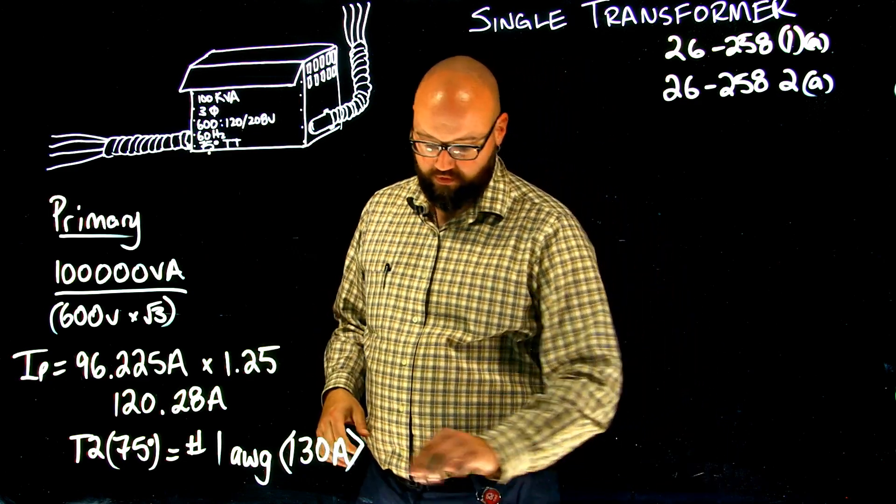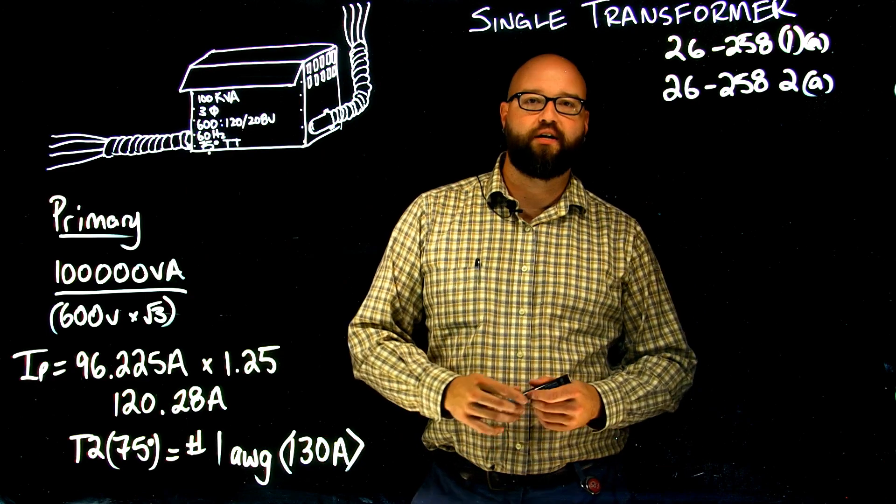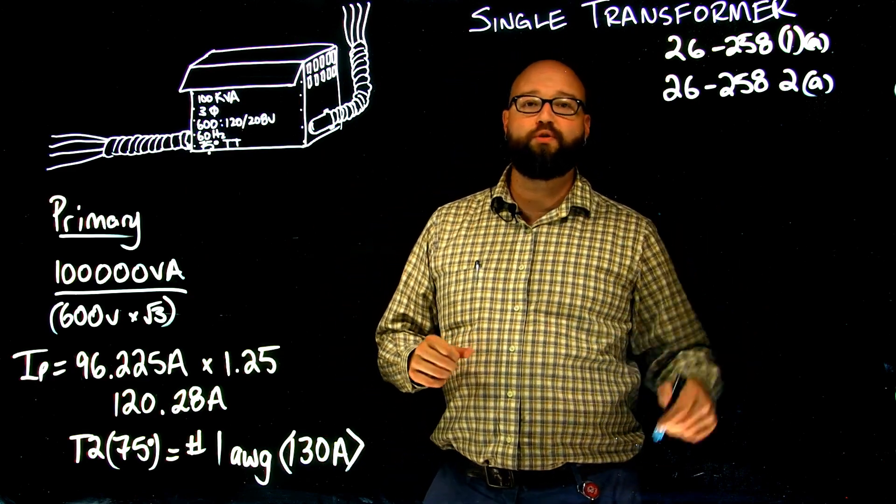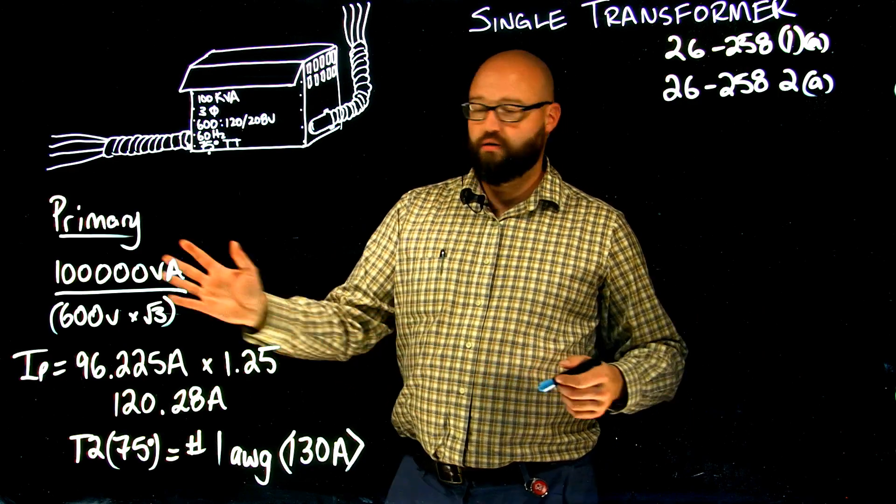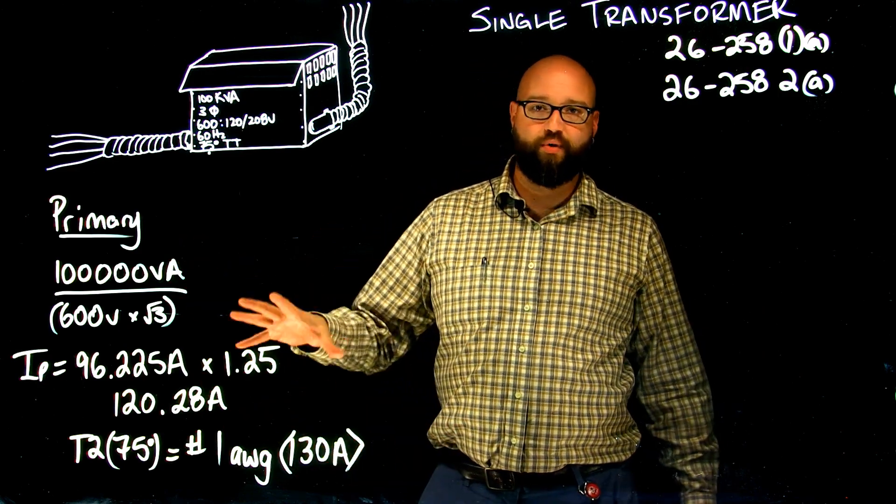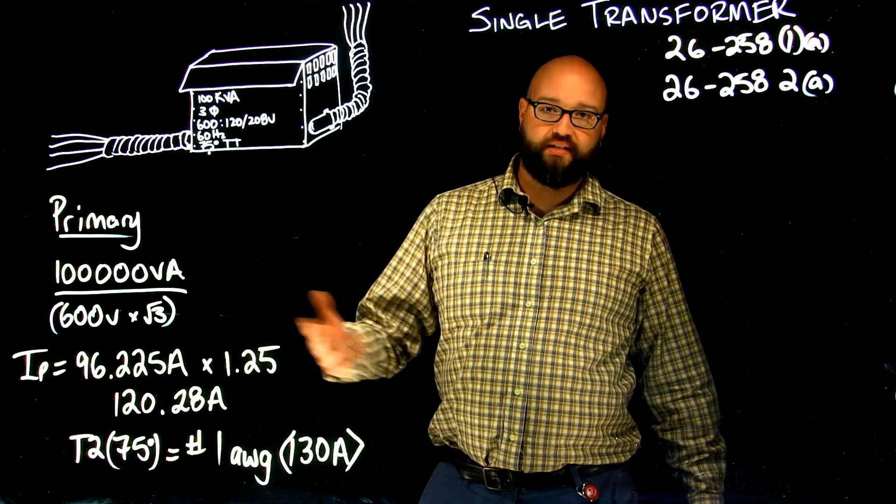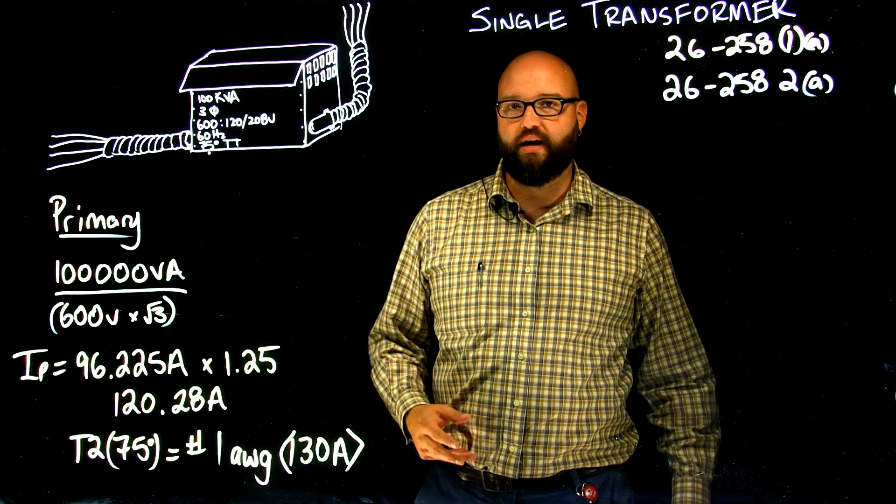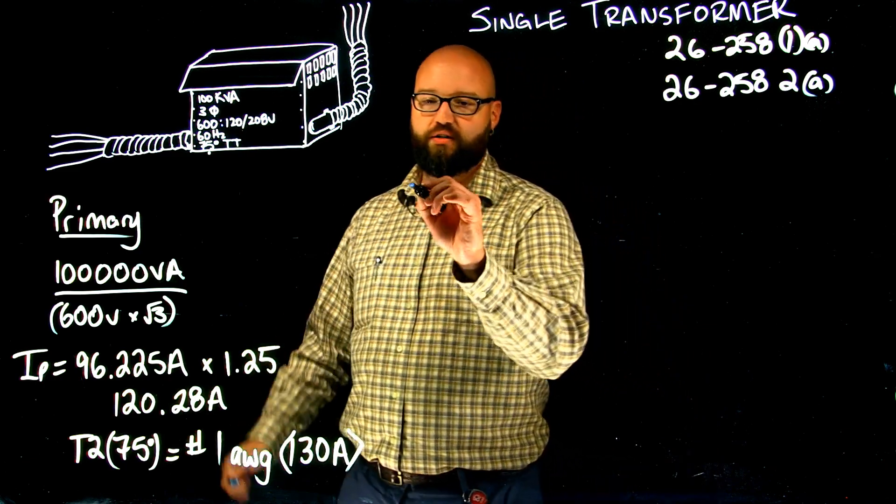So the next thing we're going to take a look at is calculating the secondary conductors of our single transformer. 26.258 subrule 2, item A, tells me exactly the same thing. We're going to take 125% of the rated secondary current, and that's going to be our minimum ampacity that we take to table 2 and select our conductor based off that. So, we'll do the calculation for our secondary.